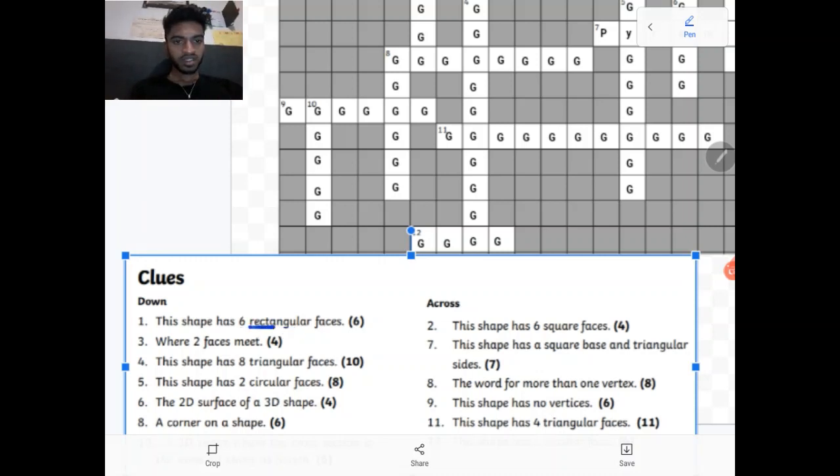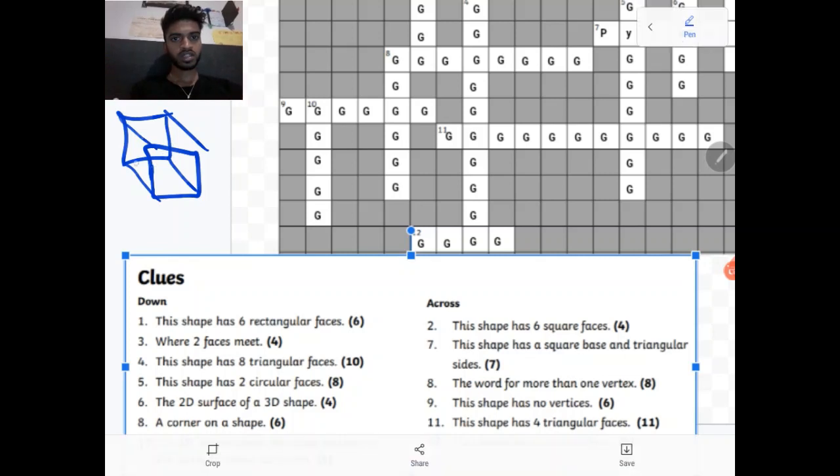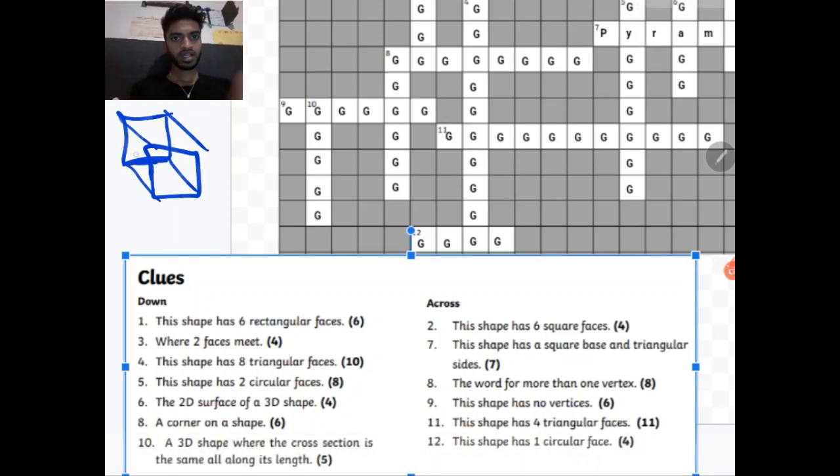This shape has six rectangular faces. That is a cuboid. A cube has all square faces. A cuboid has rectangular faces but they have the same amount of vertices and edges. Where two faces meet, so that is an edge. For example in a cube, as you can see two squares meet here so that makes an edge. A square over here, a square over here and they meet and that makes the edge.